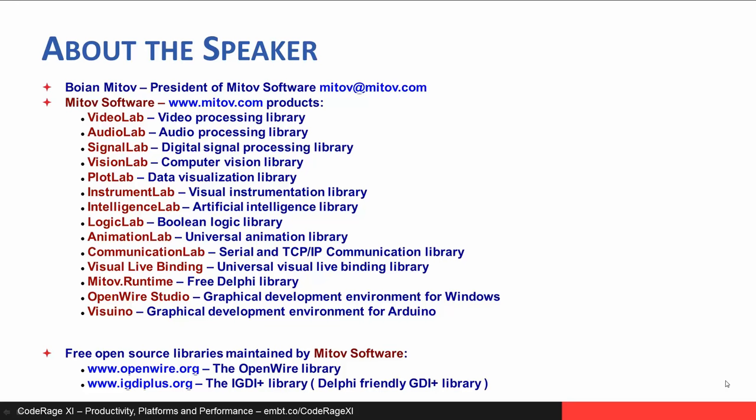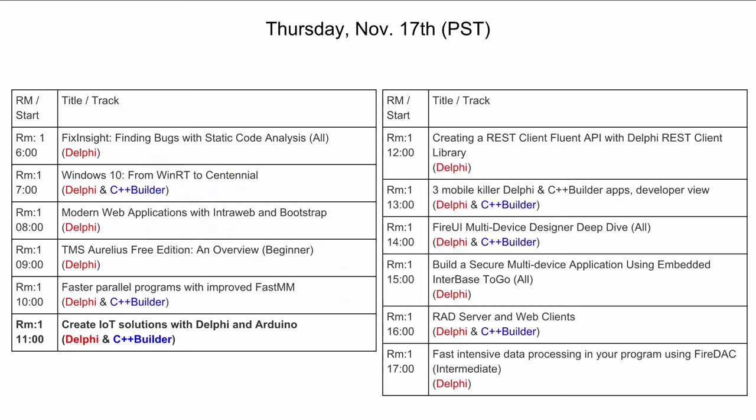Jim is asking how to buy things from the site. You can go to Order / Pricing Table on mitov.com, where each price is linked and you can order the particular product.